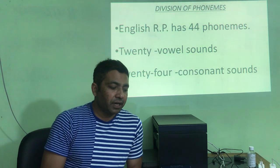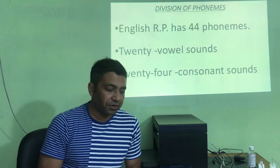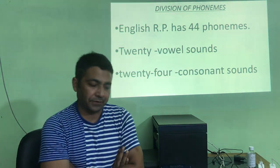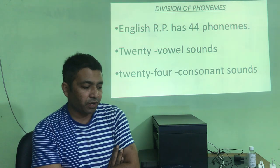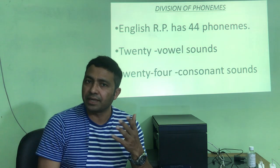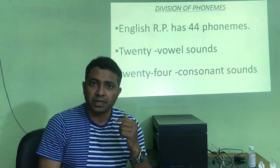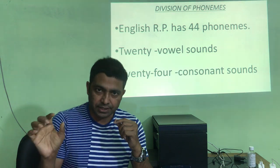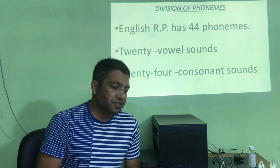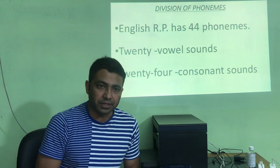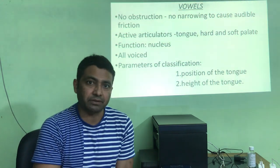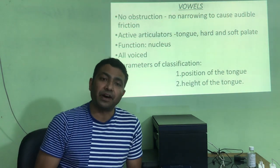Now we will talk about the division of phonemes. In total, in RP there are 44 phonemes. Remember, the number of phonemes varies language to language — in Tamil it may be up to 60, and in Bodo it may be as few as 15 or 16. But in English it is 44. Out of these 44, you have 20 vowel sounds and 24 consonant sounds. Today we will primarily talk about the vowel sounds.